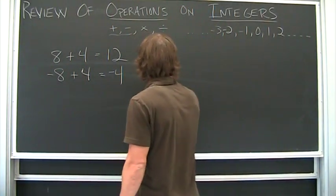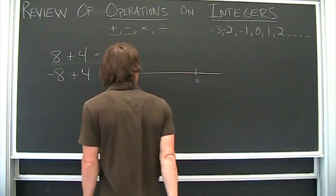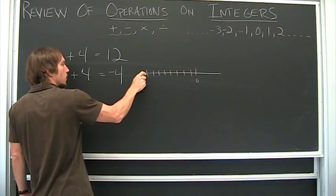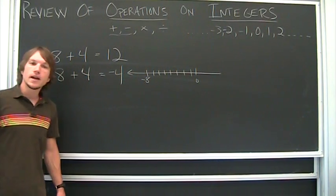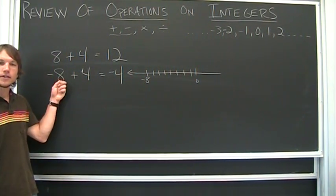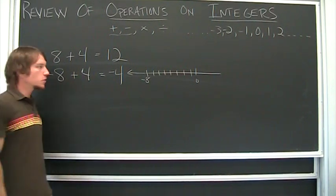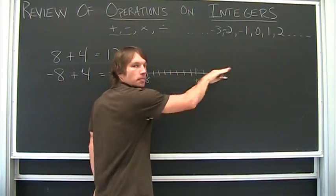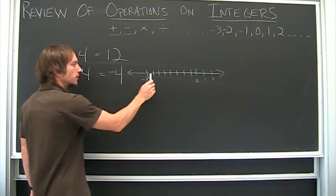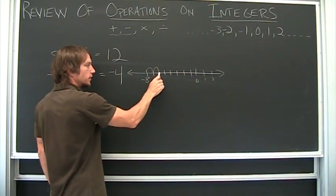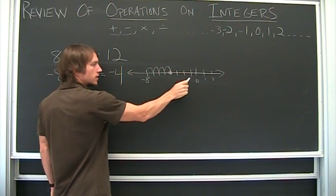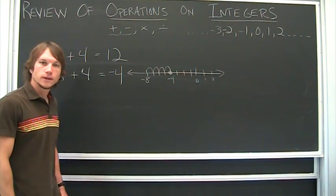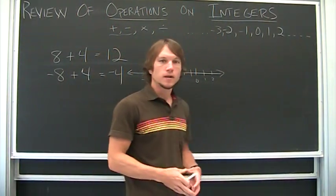Let me show you another way — think about a number line. There's my negative eight, so I start with this guy on the left, and then I add four to it. Adding four means going in the positive direction. So I go four spaces: one, two, three, four — and that puts me right at negative four.